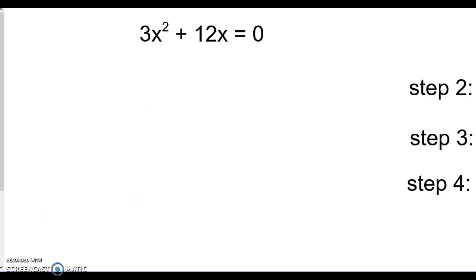All right, our next one. Step one is to set it equal to zero, and it's already set equal to zero. So step two is to factor it. When you factor, what is the first thing you do? You factor out the GCF. So we take out a 3x, and that's what we have left.